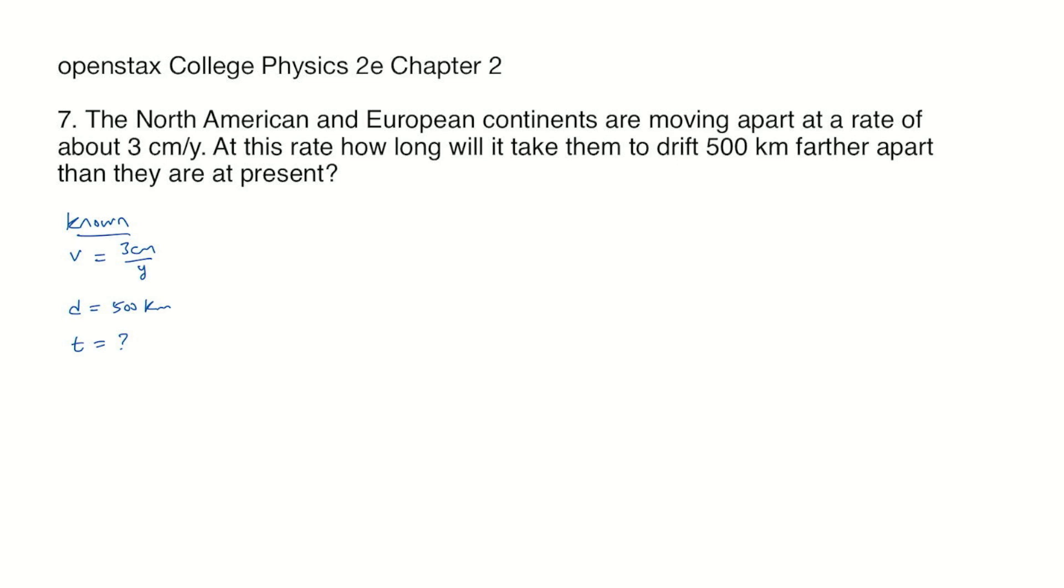All right, well, speed is distance per time. And so multiplying both sides by time, we get speed times time, or rate times time is distance. Now divide by the speed, and we get time is going to be distance divided by the speed, the rate, or the velocity. Either way, all of those work.